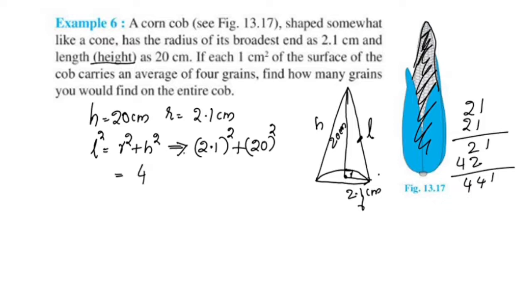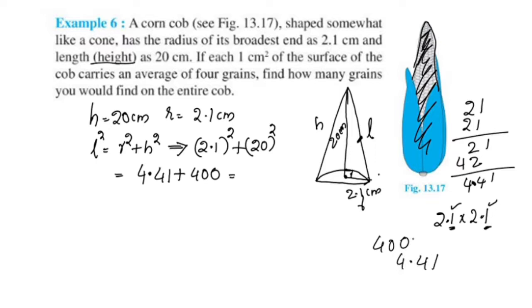2.1 × 2.1: the decimal point is 2 digits, giving us 4.41. So R² = 4.41.